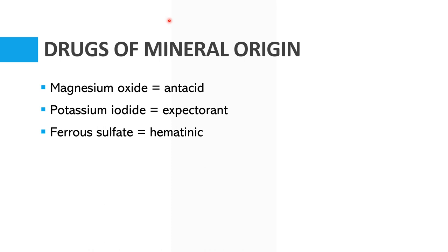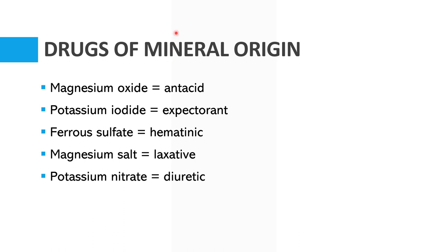Ferrosulfate can also be a hematinic — a substance essential to the proper formation of the components of the blood. Another inorganic salt is magnesium sulfate, used as a laxative to relieve occasional constipation. We also have potassium nitrate, which can be used as a diuretic in pigs, cattle, and horses. A diuretic is any substance that promotes the increased production of urine.